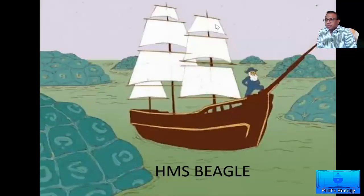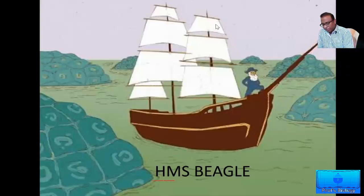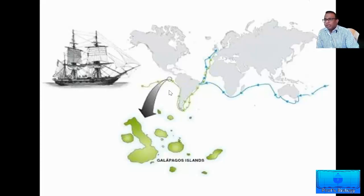How did Charles Darwin discover evolution? That is a completely different story which we will cover in the next classes, but let me tell you a few interesting things about Charles Darwin. When Darwin was very young, in the year 1831, he set on a voyage on a ship called HMS Beagle. On this voyage, HMS Beagle took him to various places around the world. This is a map which tells us the route taken by HMS Beagle on its voyage.